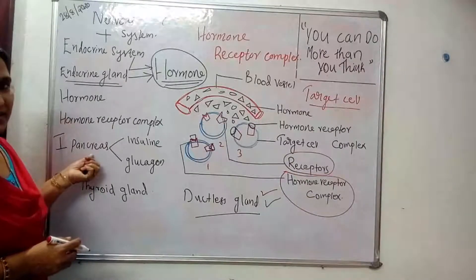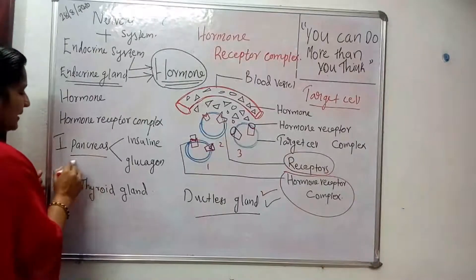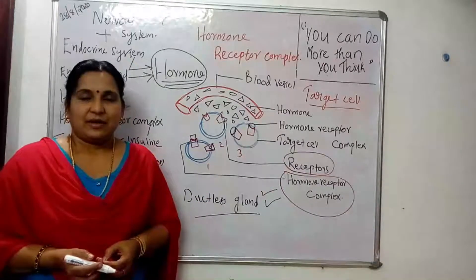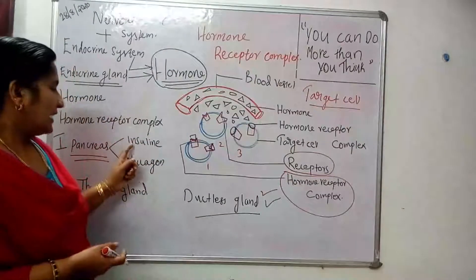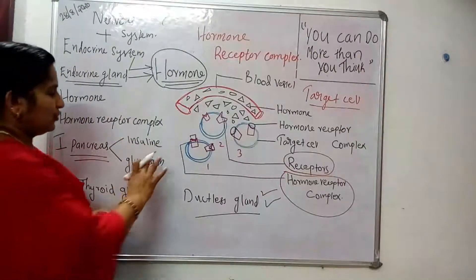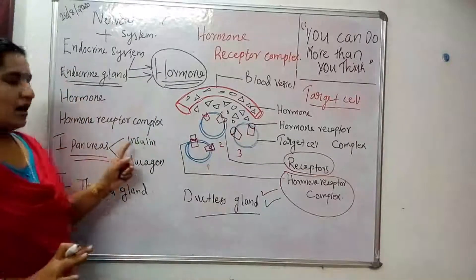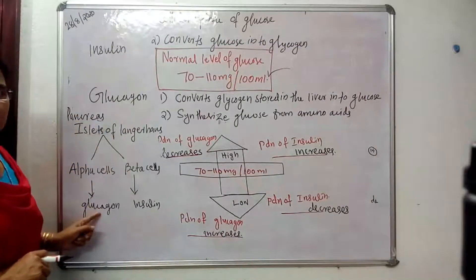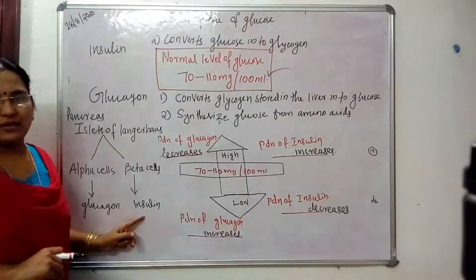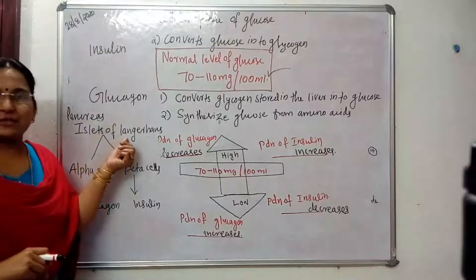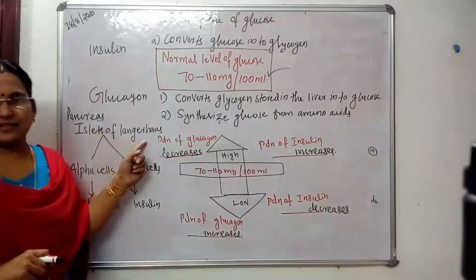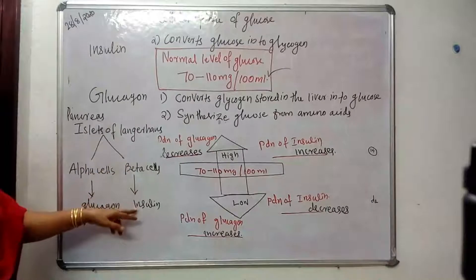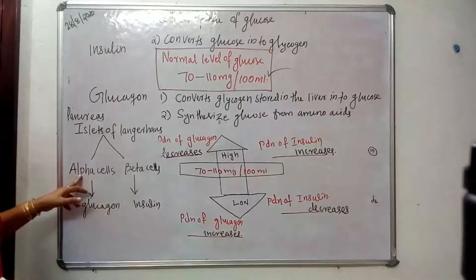Based on the syllabus, we start with the endocrine gland pancreas. The pancreas produces two hormones: insulin and glucagon. In the pancreas, there are special cells known as the islets of Langerhans, which consist of two cell types — alpha cells and beta cells. Beta cells produce insulin and alpha cells produce glucagon.